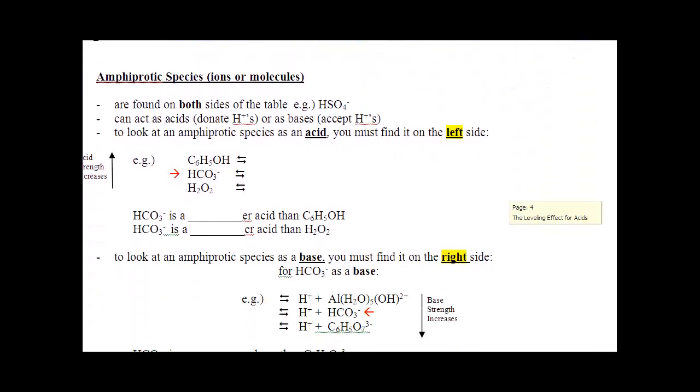One other tiny point. If the acids are on the left-hand side and the bases are on the right-hand side, what happens if you're on both sides? Well, those things are called amphiprotic. They can be acids or bases. They can donate or accept a proton. So if you're just looking at this part of your data table, HCO3- is below C6H5OH. So this is a weaker acid than C6H5OH, but a stronger acid than H2O2.